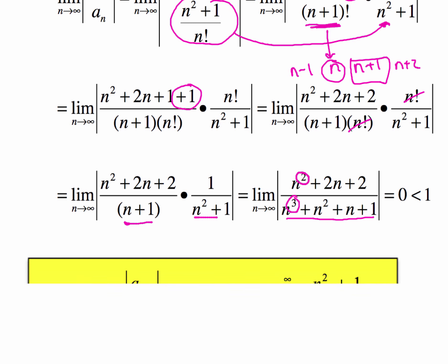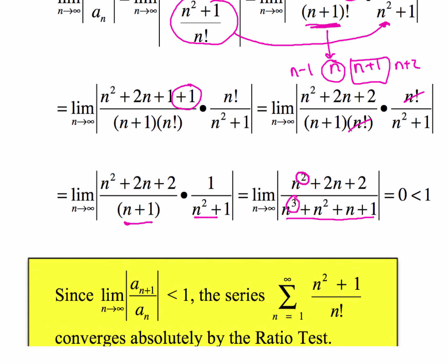Now since our limit's less than 1, then what that tells us is that our series right here is going, since it's less than 1, the series is going to converge absolutely by the ratio test. So when you write your conclusion, you've shown the limit process, you've come up with a value, in this case our value is 0, which is less than 1,